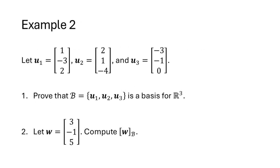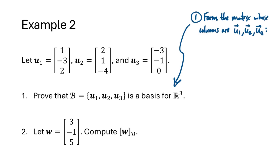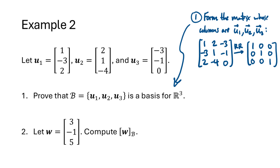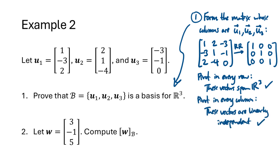Let's do more examples. We have three vectors u1, u2, and u3, and script B equals {u1, u2, u3}. We want to prove that B is a basis for R^3. We form the matrix whose columns are u1, u2, and u3 and row reduce it. Since we get a pivot in every row, by the spanning columns theorem these vectors span R^3. Since we get a pivot in every column, by the linearly independent columns theorem these vectors are linearly independent. That shows B is a basis for R^3.